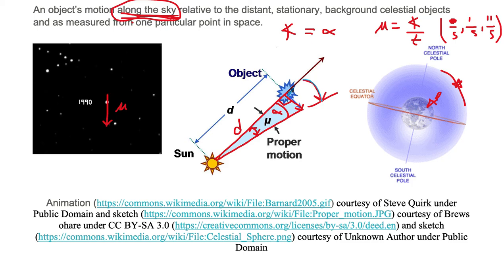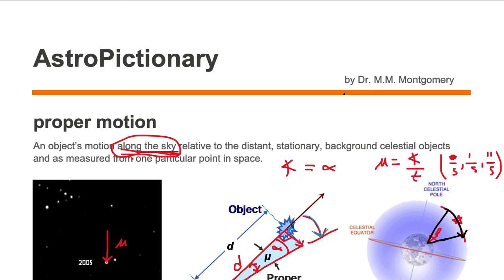Proper motion is a curvature along the sky. It's the measurement of proper motion along the celestial sphere. So it is an angle measurement over time. That's what we mean by proper motion.